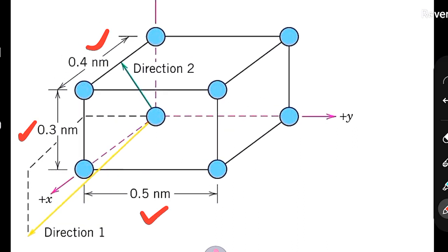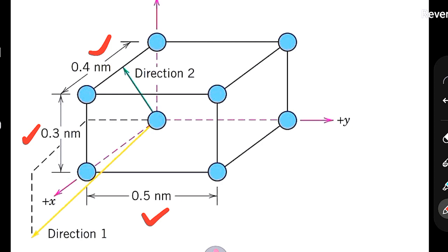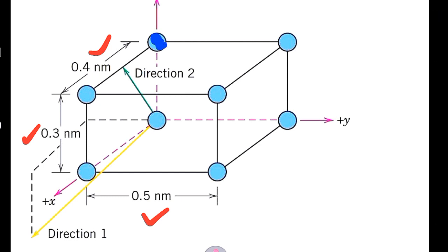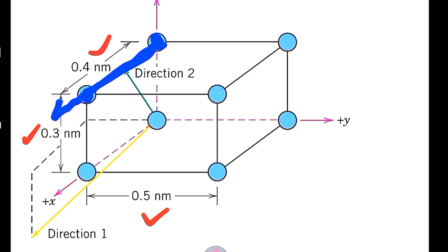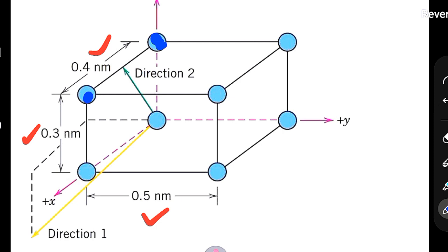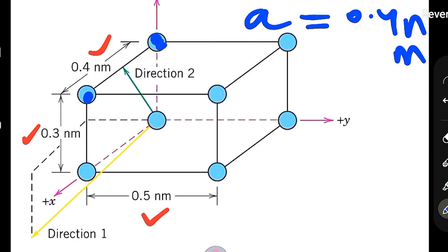The angles are all 90 degrees. The method will be similar, but we have to incorporate these different lengths. The lattice parameter along the x-dimension: we can see that the distance between two atoms along the x-direction is 0.4 nm, so a = 0.4 nm. For the z-dimension, two corner atoms are separated by 0.3 nm parallel to the z-direction.